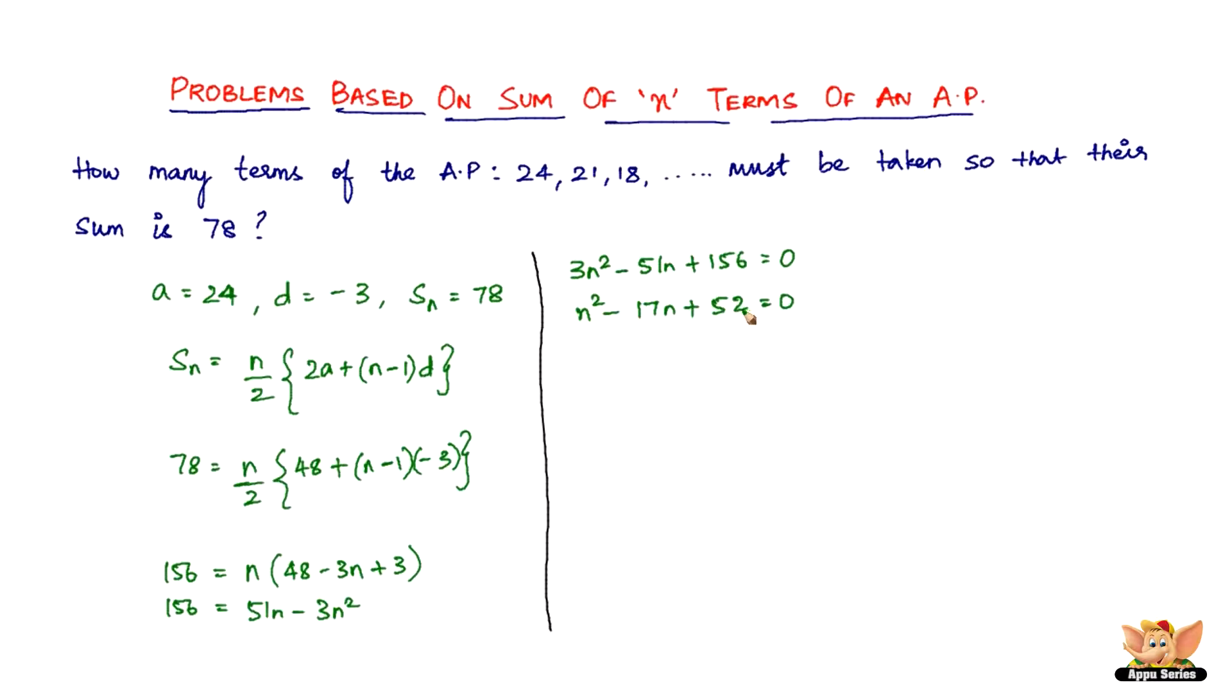So 13 and 4 are the ones. 13 times 4 is 52 and 13 plus 4 is also 17. So we have n squared minus 4n minus 13n, so minus 4n minus 13n gives you minus 17n. At the same time, 4 times 13 gives you 52.